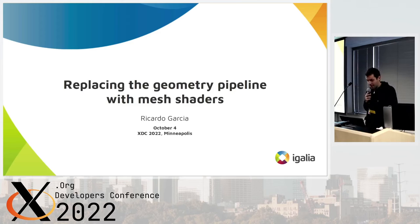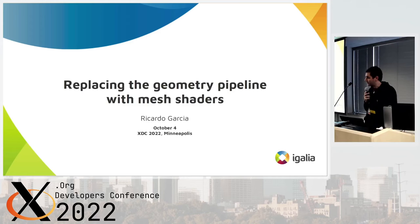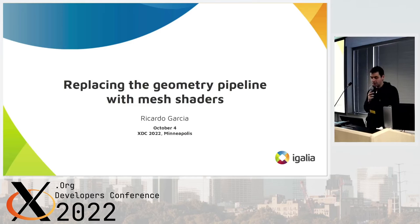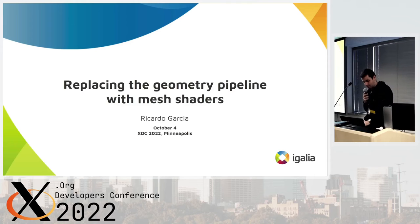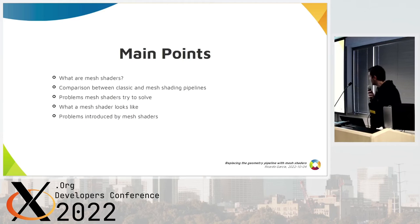Mesh shaders are a new way of processing geometry in the graphics pipeline. They introduce an alternative way of creating graphics pipelines in Vulkan, but they don't introduce a completely new type of pipeline. The new extension is multi-vendor and heavily based on the NVIDIA-only extension that existed before. Some details have been fine-tuned to make it closer to the DirectX 12 version of mesh shaders and to make it easier to implement for other vendors. I want to cover what mesh shaders are, how they compare to classic pipelines, and how they solve some problems.